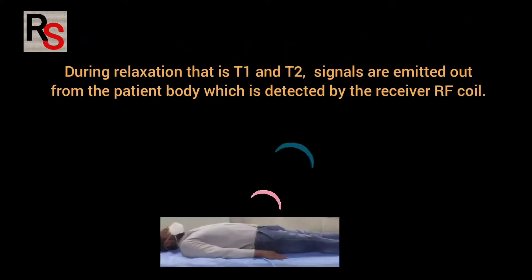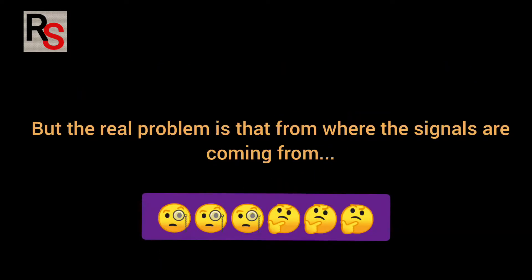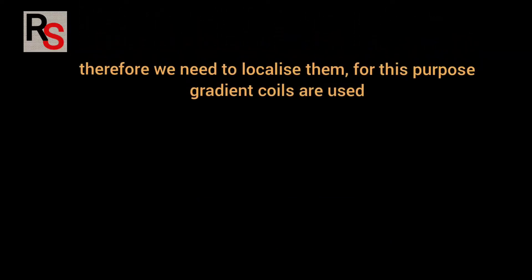During relaxation, i.e. T1 and T2, signals are emitted out from the patient body which is detected by RF receiver coil. But the real problem is that from where these signals are coming from. Therefore we need to localize them.